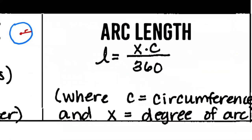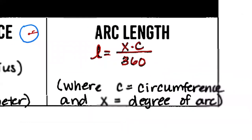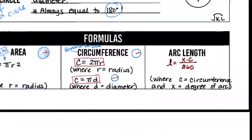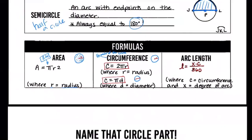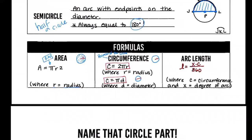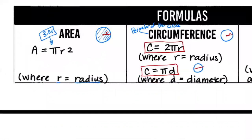There's one more formula: arc length. Arc length = (x/360) × C, where C is the circumference and x is the degree measure of the arc. We divide by 360 because there are 360 degrees in the whole circle. We'll use arc length later — for this packet we're focusing on area and circumference.